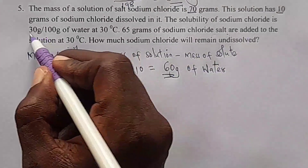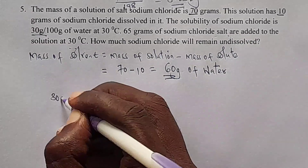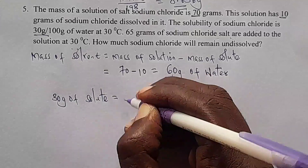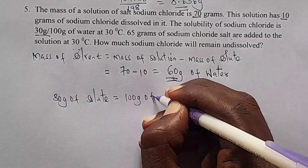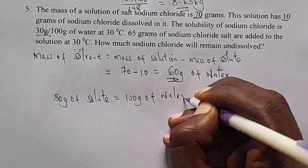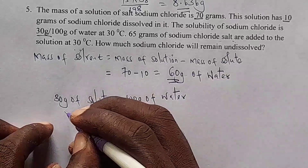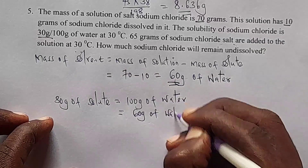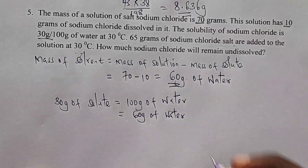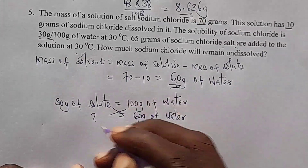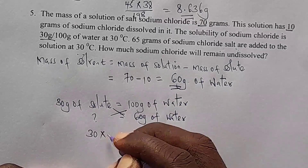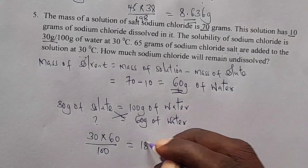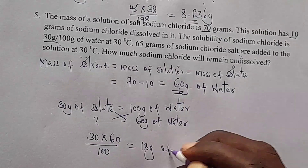Given solubility: if 30 gram of solute can dissolve in 100 gram of water, what mass dissolves in 60 gram of water? Cross multiplying: 30 times 60 divided by 100 gives 18 gram of sodium chloride that can dissolve in the 60 gram of water.